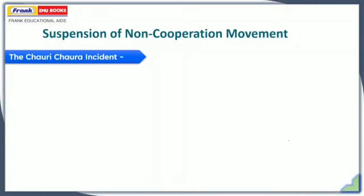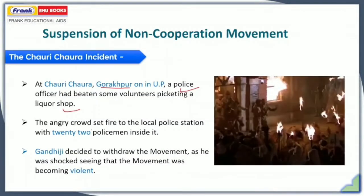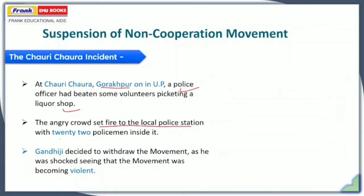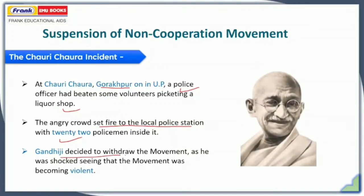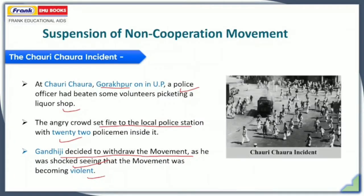We will now see the suspension of the non-cooperation movement — why this movement had to stop. The most important incident was the Chauri Chaura incident. A police officer was beaten by some volunteers picketing a liquor shop. The angry crowd set fire to the local police station, which had 22 policemen inside it. Gandhiji decided to withdraw the movement as he was shocked seeing it become violent. Gandhiji's idea was never of violence. Thus, he revoked the non-cooperation movement. You can see an image here which describes the Chauri Chaura incident.